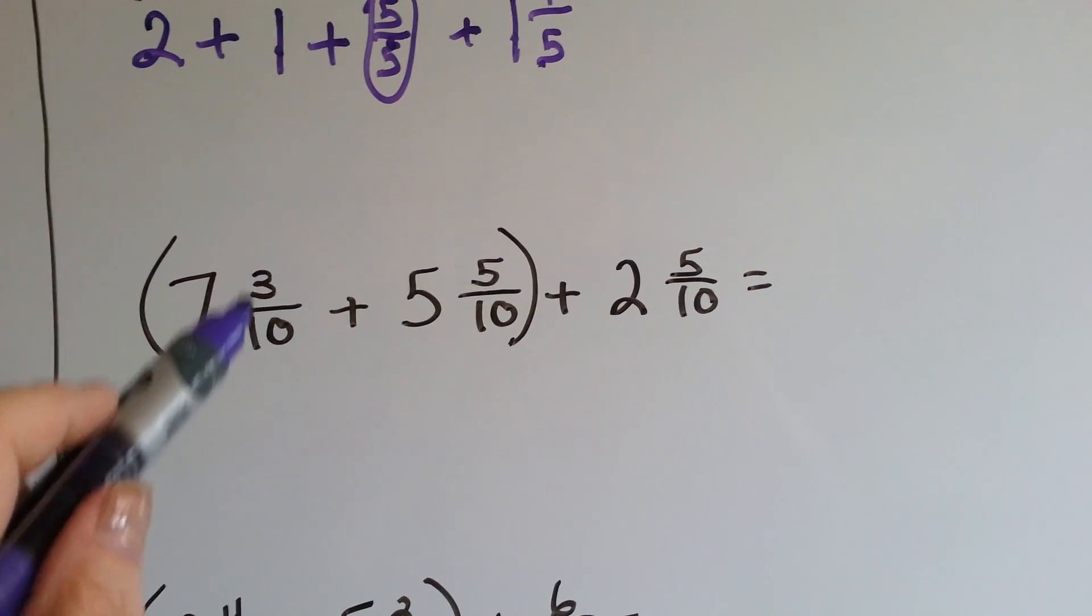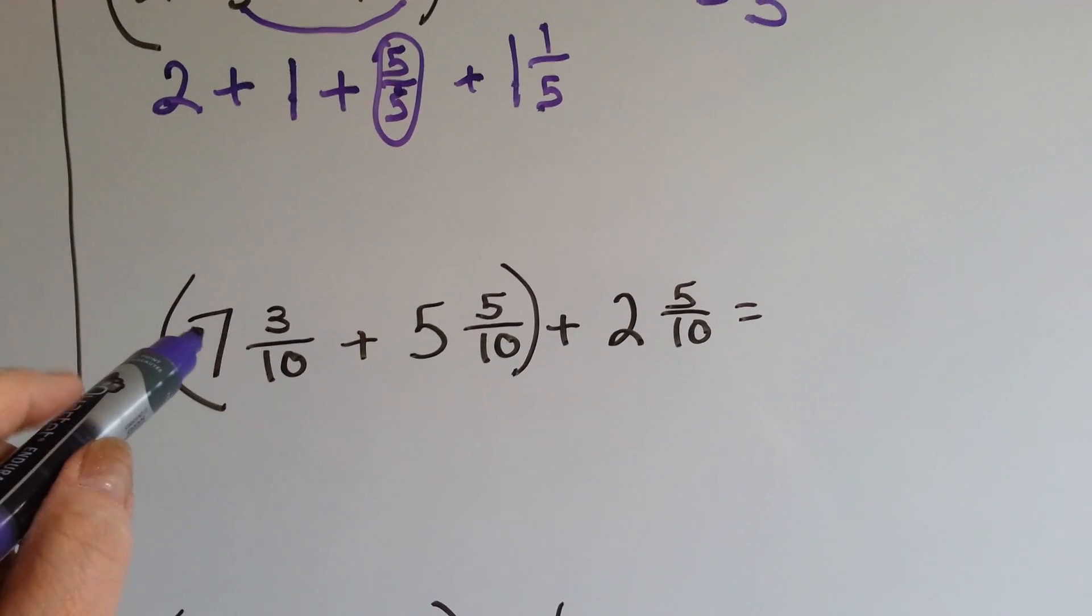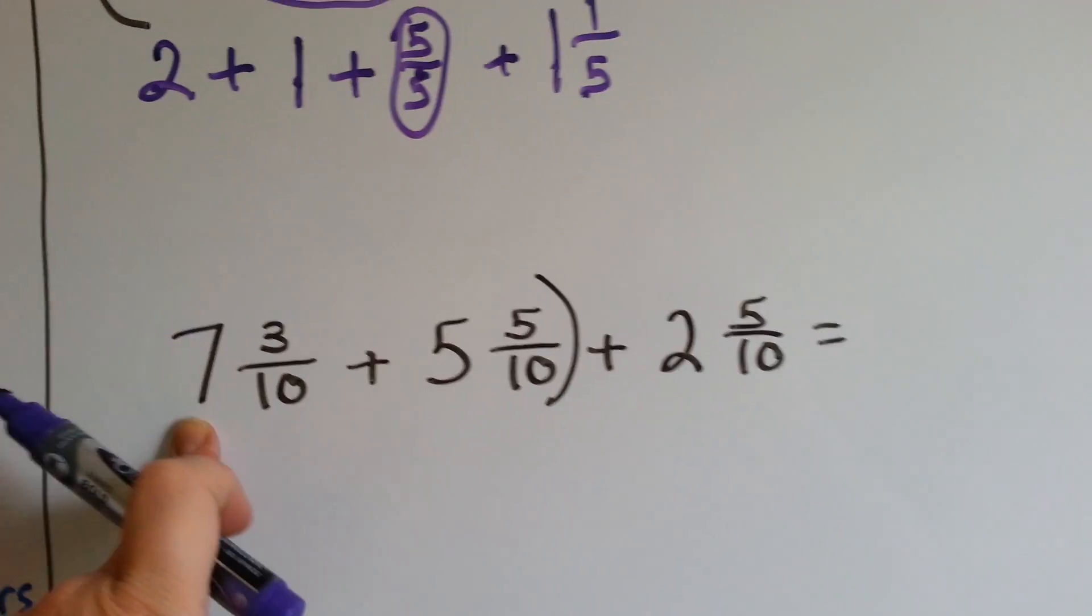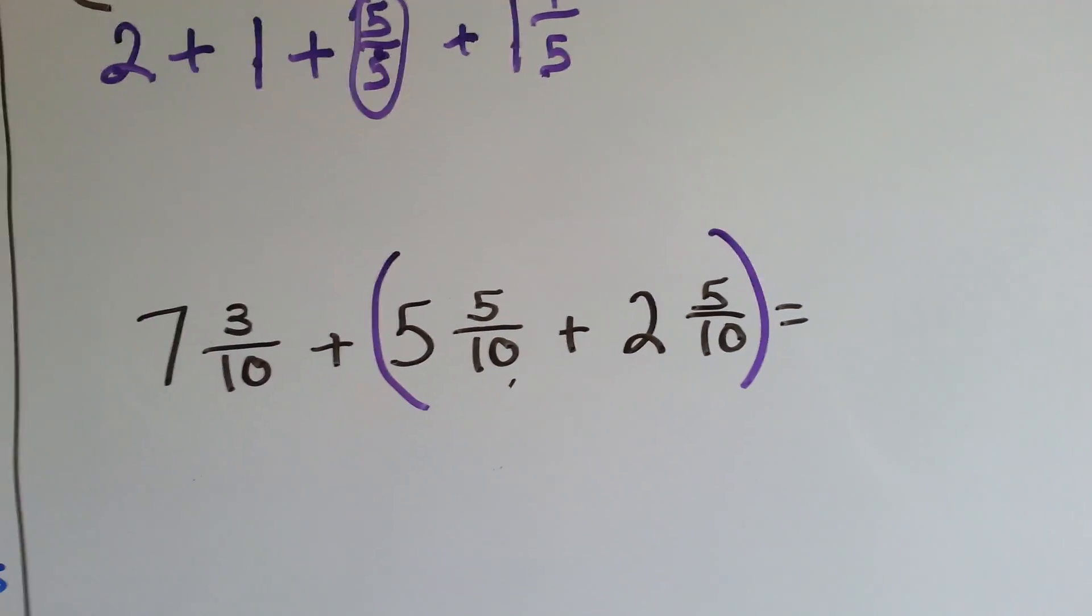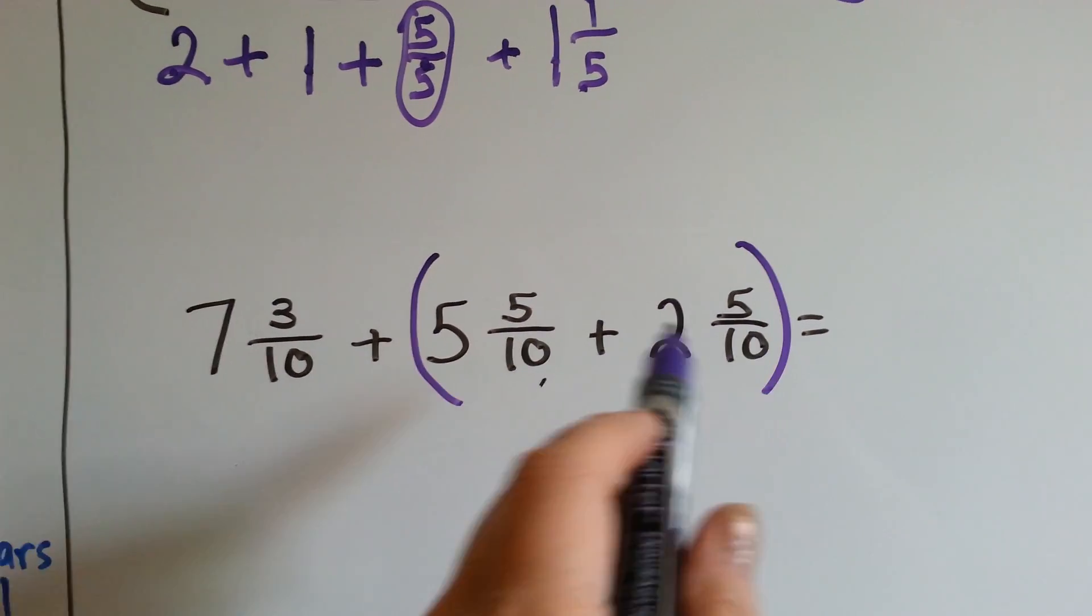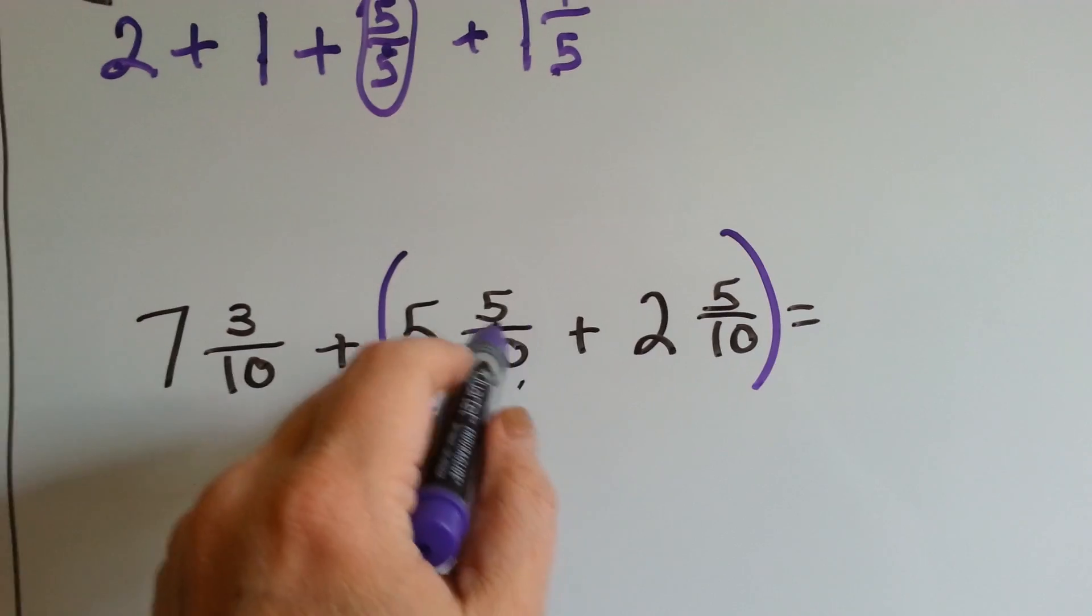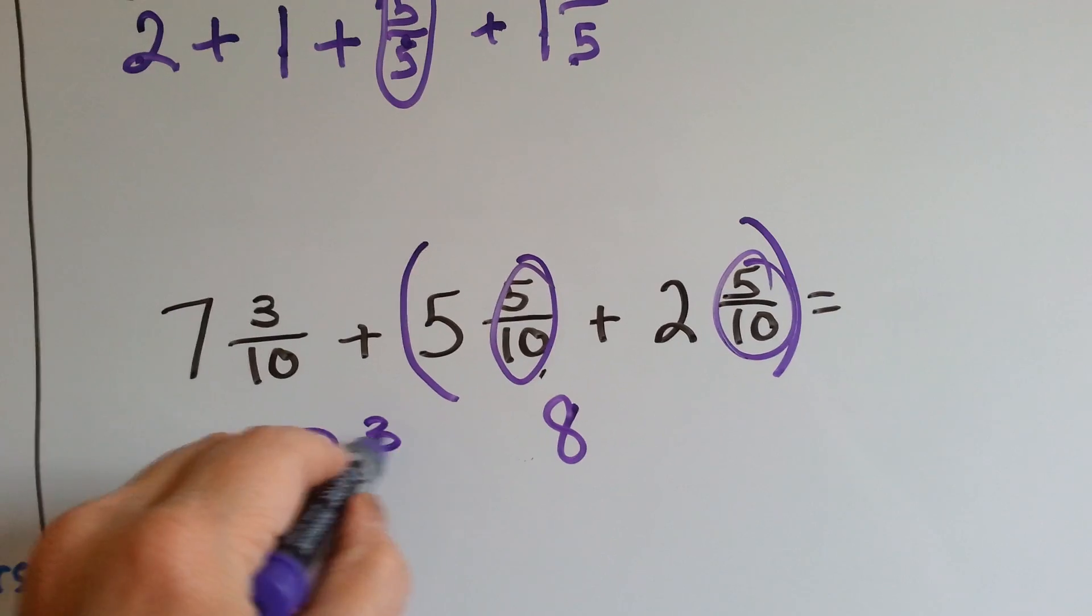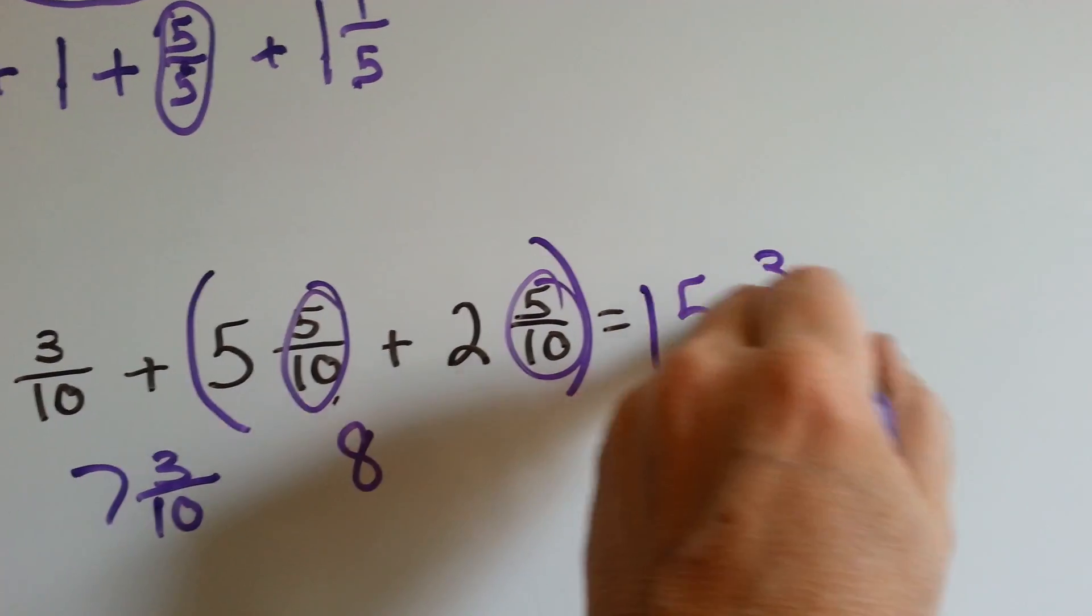How about this one? We've got 7 and 3 tenths plus 5 and 5 tenths plus 2 and 5 tenths. Is it helpful to have the 7 and 3 tenths grouped with the 5 and 5 tenths? Actually, in this case, wouldn't it be better if we grouped the two 5 tenths together to get a 10 tenth? Yeah, it would. Associative property. We're going to group these two guys together because even for mental math, they're going to help us answer the problem. 5, 6, 7, and 8 plus 7 and 3 tenths gets us, 7 plus 8 is 15, and we move the 3 tenths over.